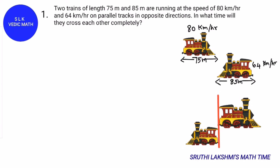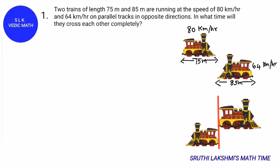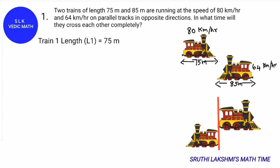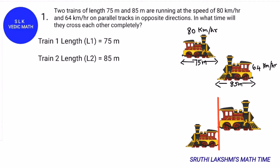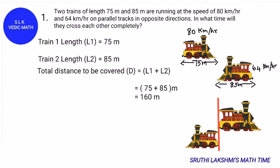As you see in this picture, they are facing towards each other. The question asks: in what time will they cross each other completely? When they cross each other completely, both trains' ends will meet each other. The first train's length is 75m and the second train's length is 85m. To find the relative distance, we do L1 plus L2: 75 plus 85 equals 160m.